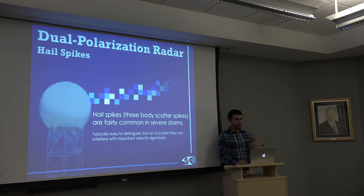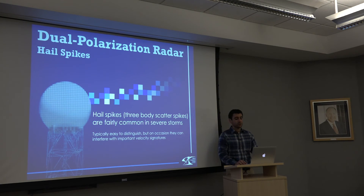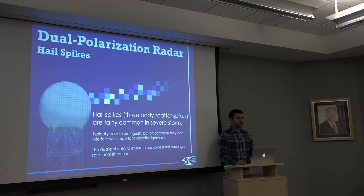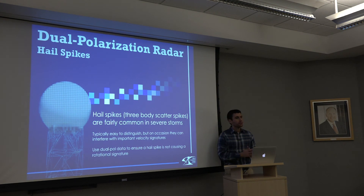They're typically easy to distinguish when you use those data, but on occasion they can interfere with velocity signatures. You can get strong inbound signatures right next to outbound signatures that may start to masquerade as a rotational signature. We want to use the dual-pol data — especially correlation coefficient — to ensure a hail spike is not causing that apparent rotational signature. That's how we verify whether we can trust those velocity data and whether we really have a rotational signature or just a hail spike masquerading as one. And with that, we'll wrap up our hail spike segment.